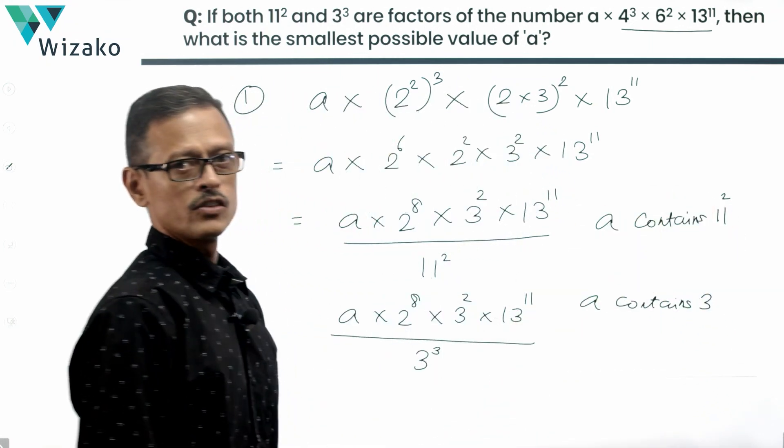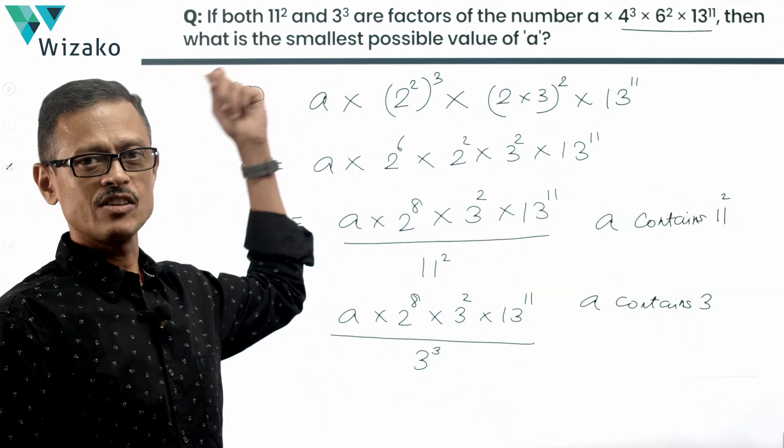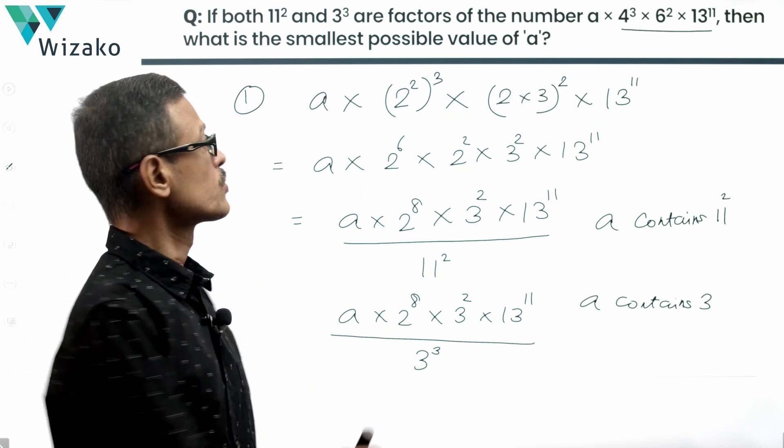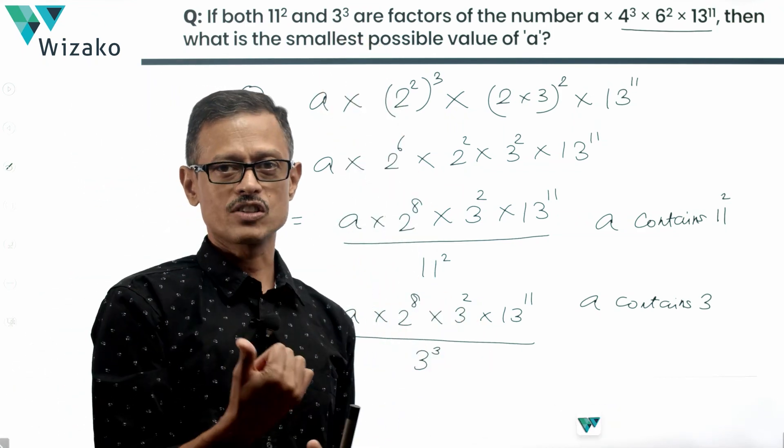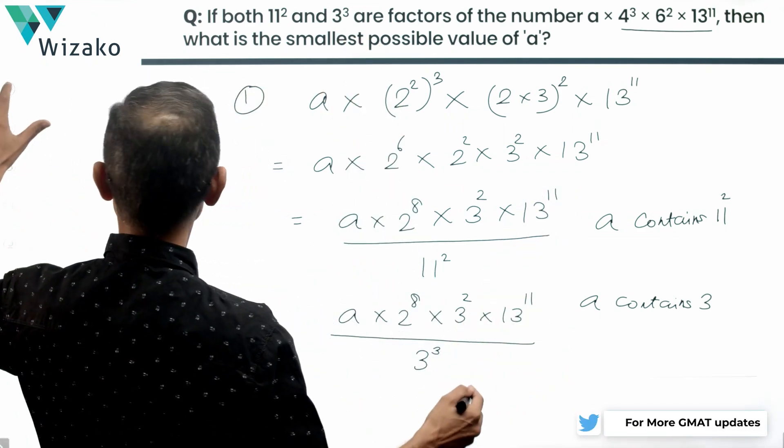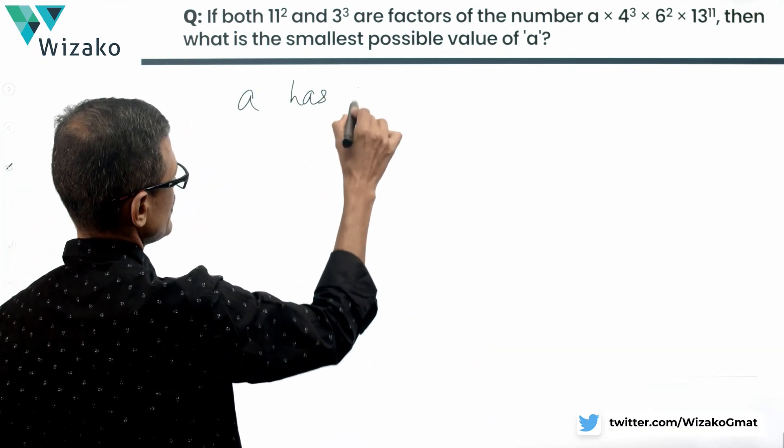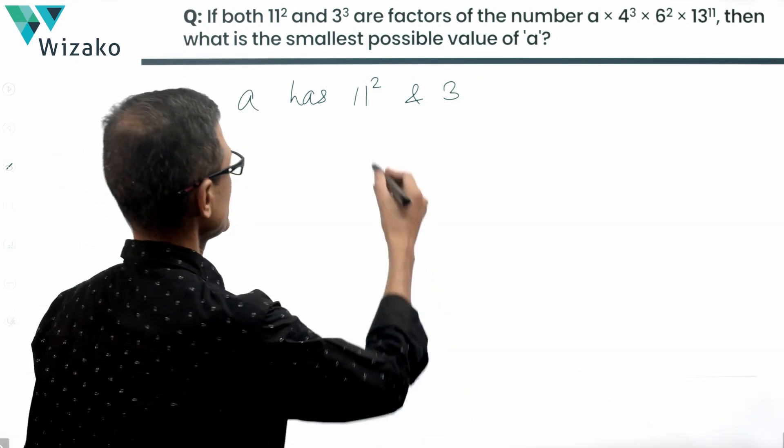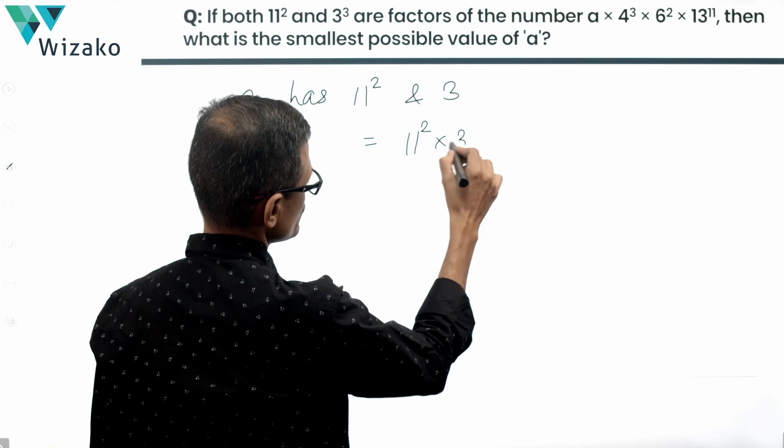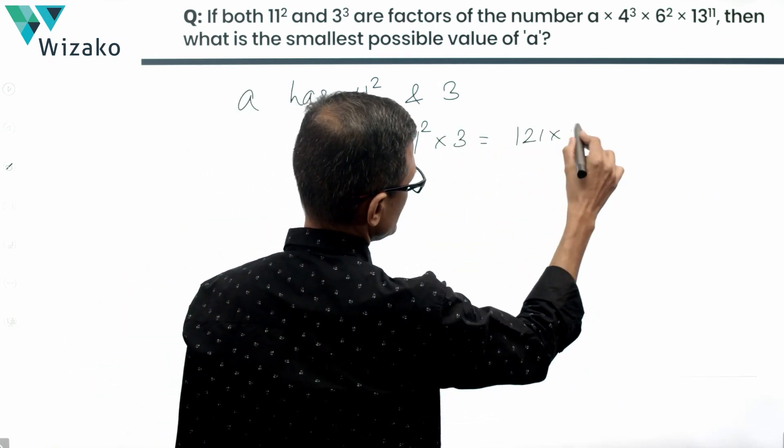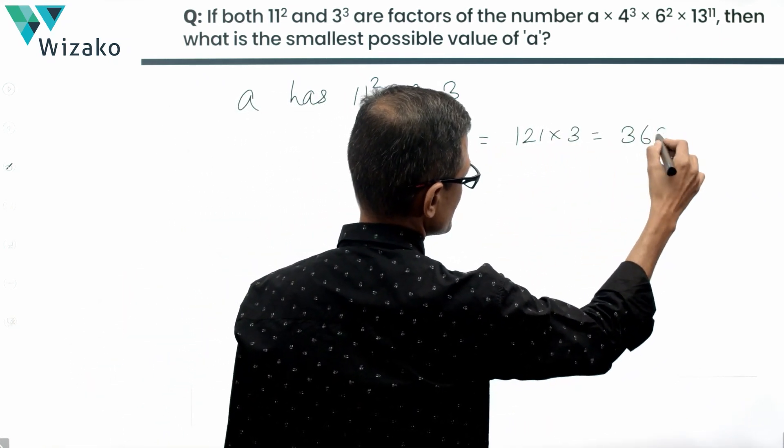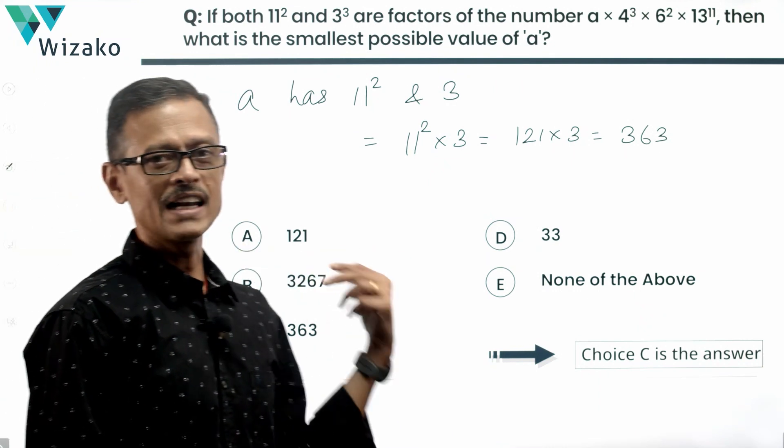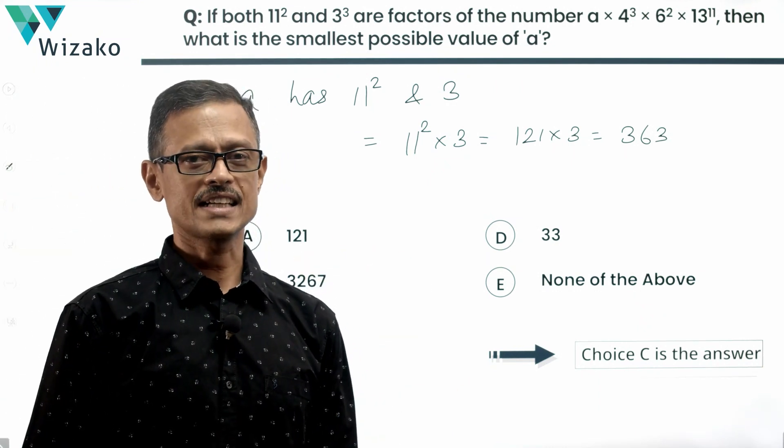So A contains 11 square so that it's divisible by 11 square. A needs to contain a 3 so that this 3 times 3 square will make it a 3 cube. So what all does A contain? A contains 11 square and also needs to have a 3 in it. So least value that A can be is the product of these two. 11 square times 3. 11 square is 121. 121 times 3 is equal to 363. Take a look at the answer options. 363 is choice C. So least value that A can take is 363. Choice C is the correct answer.